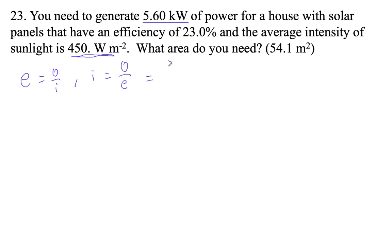So 5.6 times 10 to the third, that's our output. Our efficiency is 0.23. So the energy from the sun is much larger, right? 5,600 divided by 0.23.